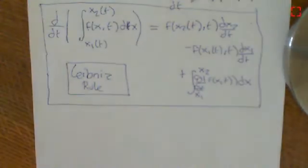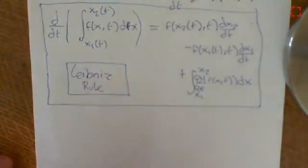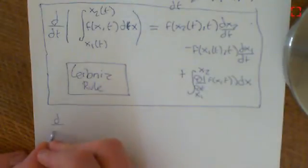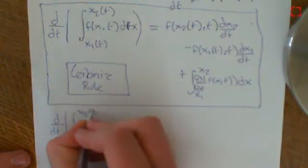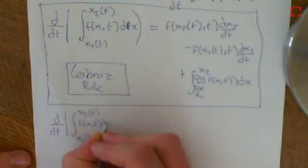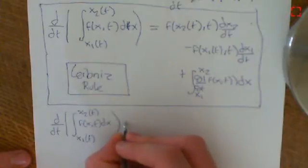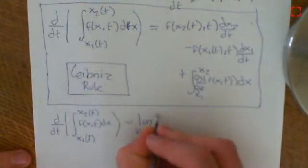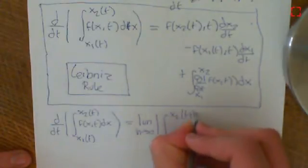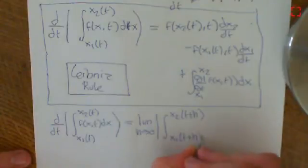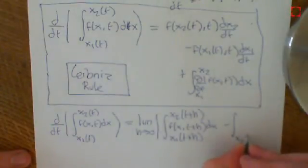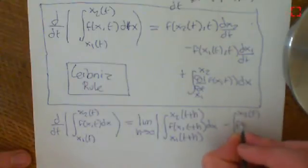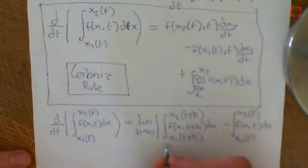We're going to rigorously derive the Leibniz rule using the second fundamental theorem of calculus. If we want to take the derivative with respect to time of the integral from x1 of t to x2 of t of f of x (which also depends on time) dx, then that equals the limit as h approaches 0 of the integral from x1(t+h) to x2(t+h) of f(x, t+h) dx, minus the integral from x1(t) to x2(t) of f(x, t) dx, all divided by h.